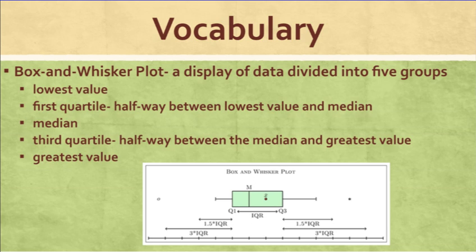It's just a display of data divided into five groups. Those five groups are: the lowest value, which is the smallest number in your data set; the first quartile, which is the halfway point between the lowest value and the median, or the median of the first half of the data set; the median, which is the middle number of the whole data set; the third quartile, which is the halfway point between the median and the greatest value, or the median of the second half; and then the greatest value, which is the largest number overall.